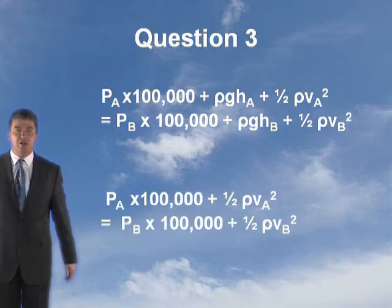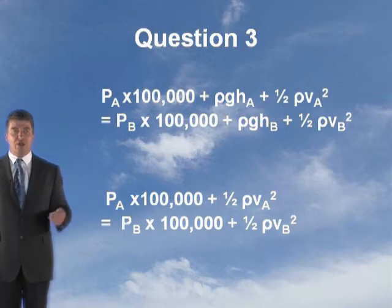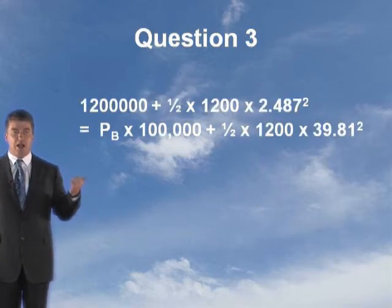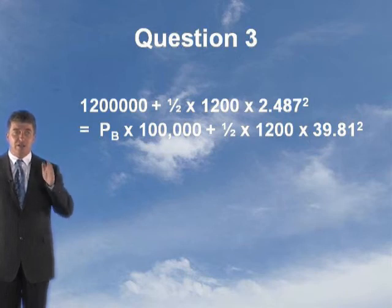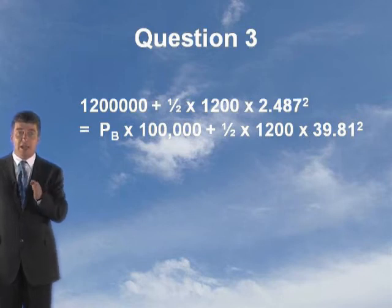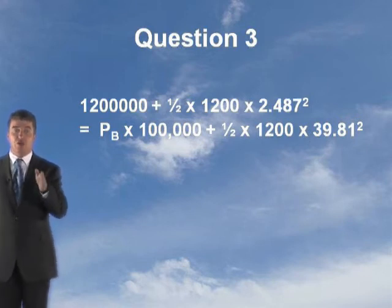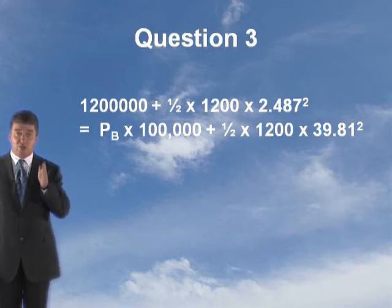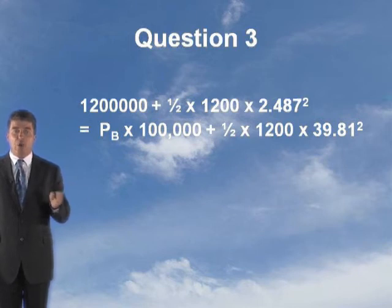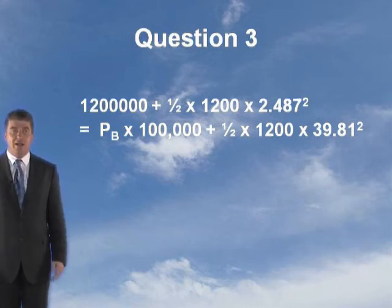Now you're substituting all your known values. You know the pressure, 12 bar, so it's 12 times 100,000 is 1,200,000 plus half times 1,200, that's the concentrated density, times 2.487 squared equals the pressure at B, that's what we're trying to work out, times 100,000 plus half times the density, don't forget the density is 1,200, times 39.81 squared. Substitute in all known values.